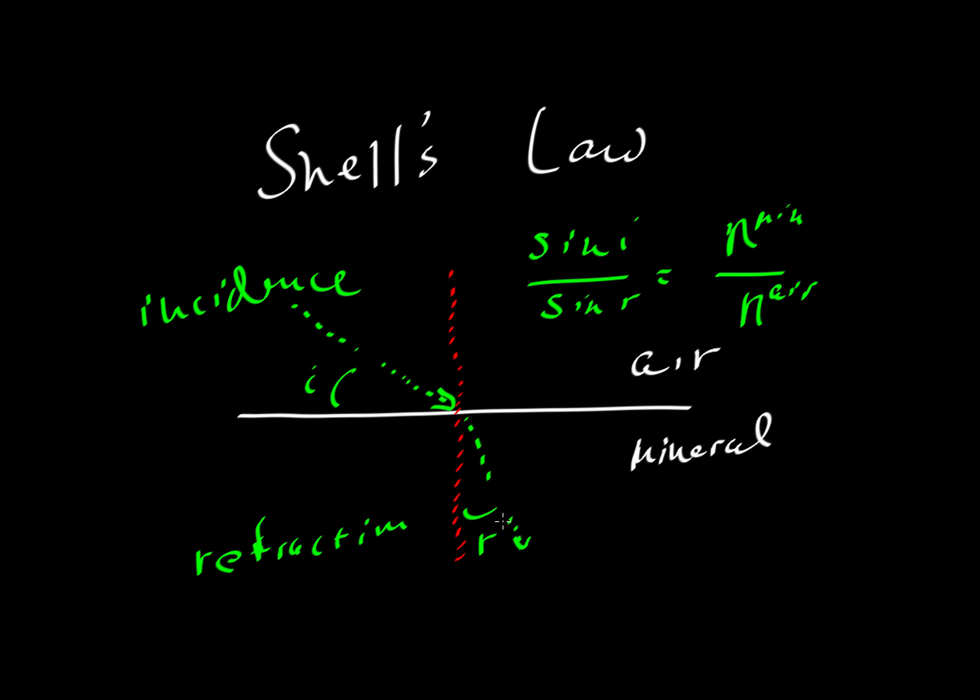So sine I over sine R is basically this fellow over here. That comes up as the numerator. Let's just call this N2 because that's the way it's usually written. So we'll call this N2, and this one is N1. We usually write this as N2 over N1. So that's the way Snell's Law is usually taken.